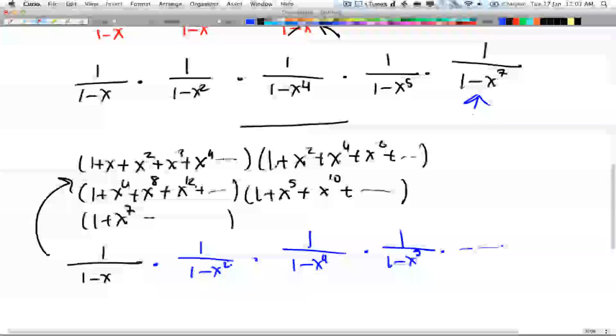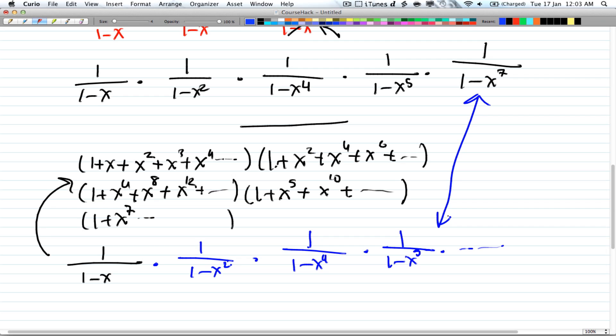And notice that these two are the same now. And that proves that the number of partitions where no summand is divisible by 3 is the same as the partition where no summand appears more than twice.